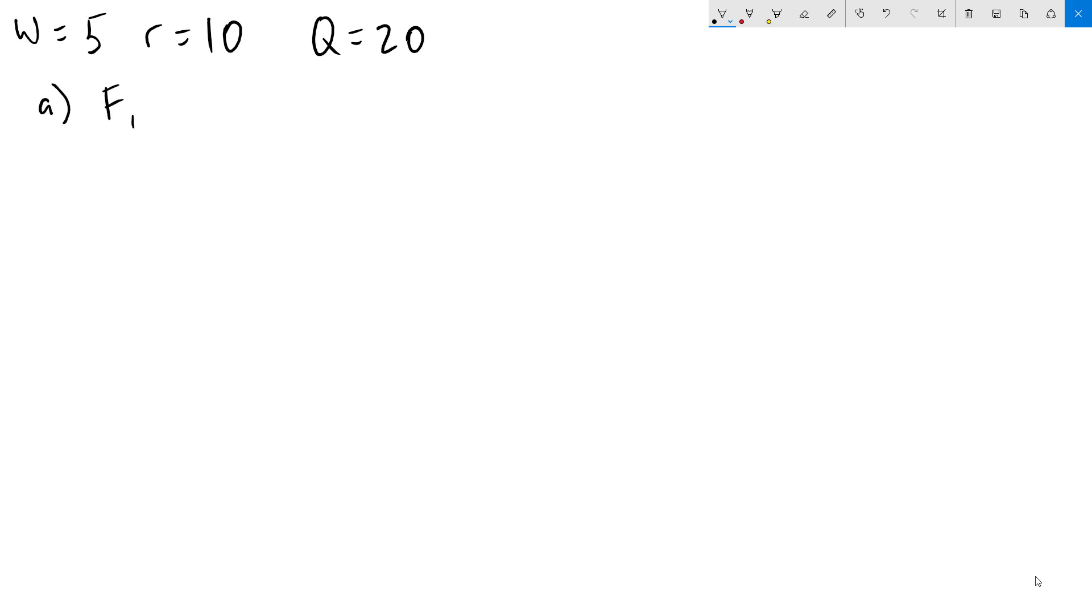In the first part, our production function is 5k plus 2L. First thing we notice is that this is a linear production function. To figure out what we need to do here, we're going to first find our marginal product of labor.